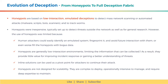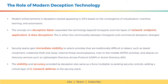Modern enhancements in deception started appearing in 2014, based on the convergence of virtualization, machine learning, and automation. The concept of a deception fabric expanded the technology beyond honeypots into layers of network, endpoint, application, and data deceptions. Security teams gain immediate visibility to attack activities that are traditionally difficult to detect, such as lateral movement, credential theft and reuse, internal threat reconnaissance, man-in-the-middle activities, and attacks on directory services such as LDAP or Active Directory. The visibility and accuracy provided by deception also serve as a force multiplier to existing security controls, adding a critical layer of in-network defense to the security stack.